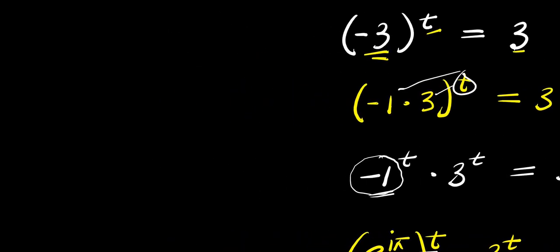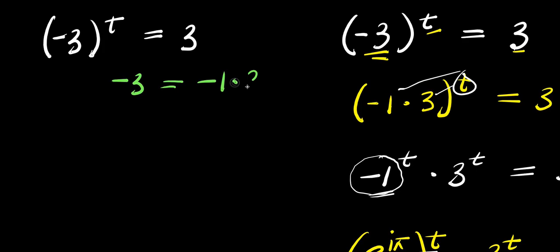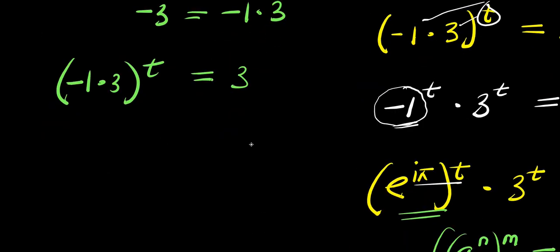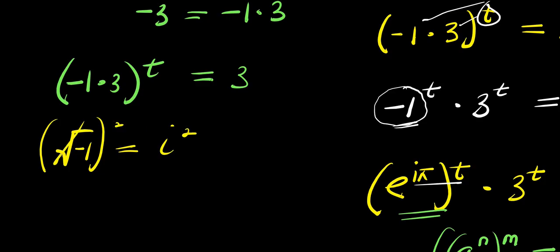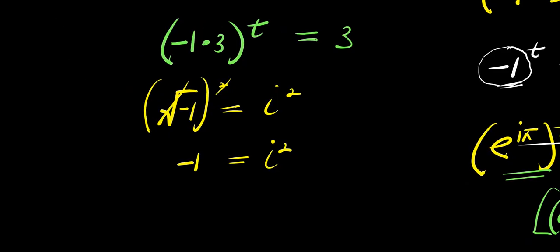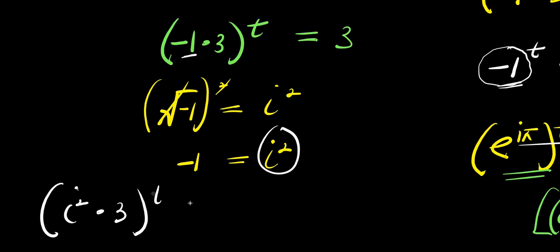Now, the next thing I'm going to do is consider a different approach to solving this. We still have the same problem: negative three to the power of t equals three. I still express negative three as negative one times three. Now I apply the identity that the square root of negative one equals i, so squaring both sides gives negative one equals i squared. I replace negative one with i squared, giving i squared times three, raised to the power of t, equals three.